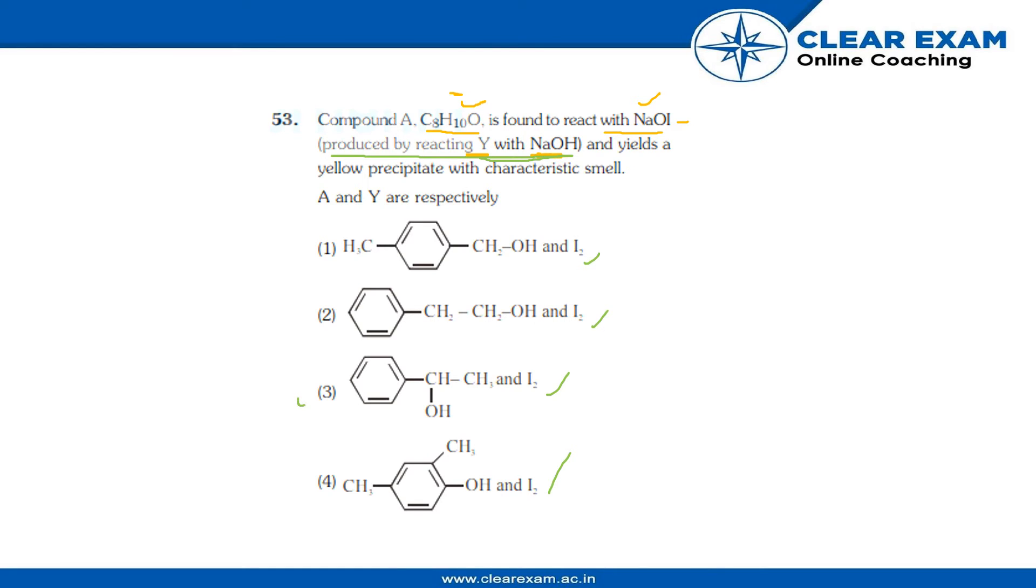The correct answer is the third option, as this compound A given over here is a secondary alcohol which on oxidation gives phenylmethyl ketone, or we can say acetophenone, which with further reaction with I2, as it is written in the question...